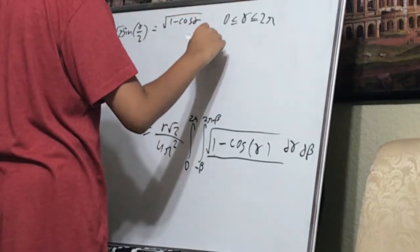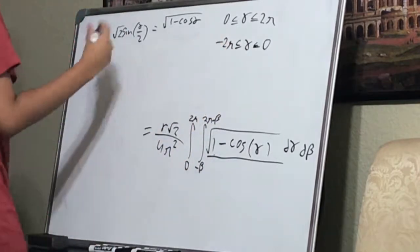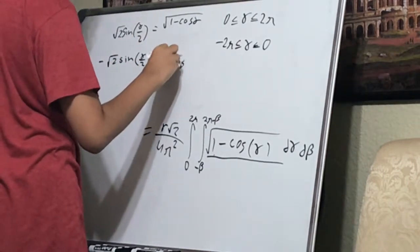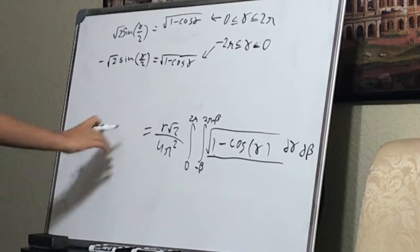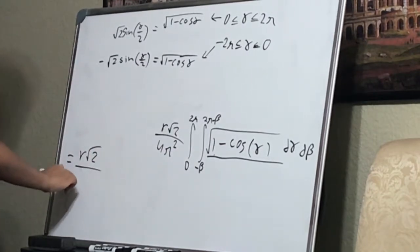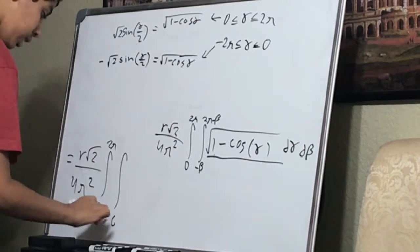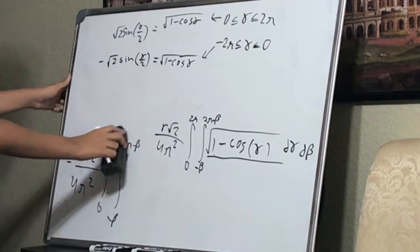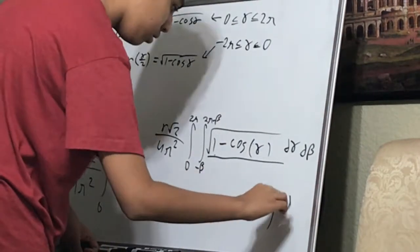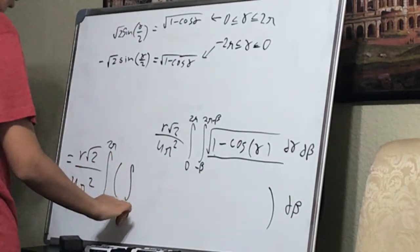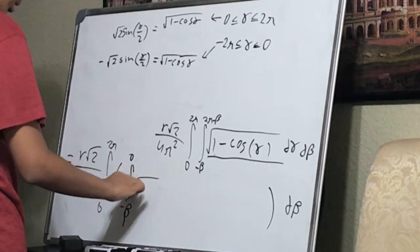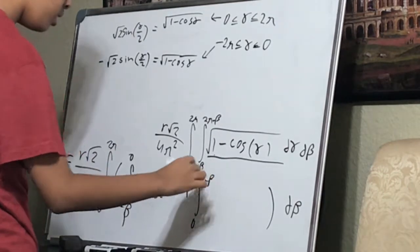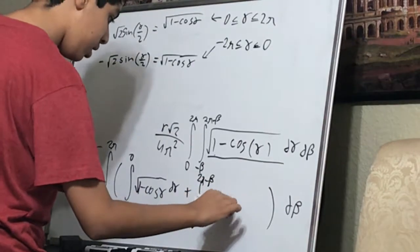When gamma is between negative two pi and zero, the sine expression turns negative. So we have two cases: one where gamma is negative and one where gamma is positive. We can split the integral up: an integral from negative beta to zero of the square root of one minus cosine gamma d gamma, plus an integral from zero to two pi minus beta of the square root of one minus cosine gamma d gamma.